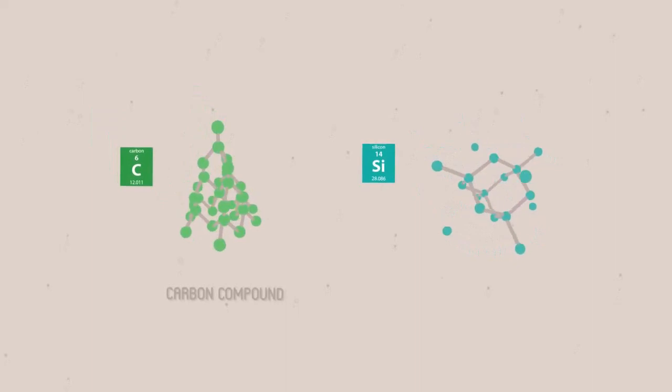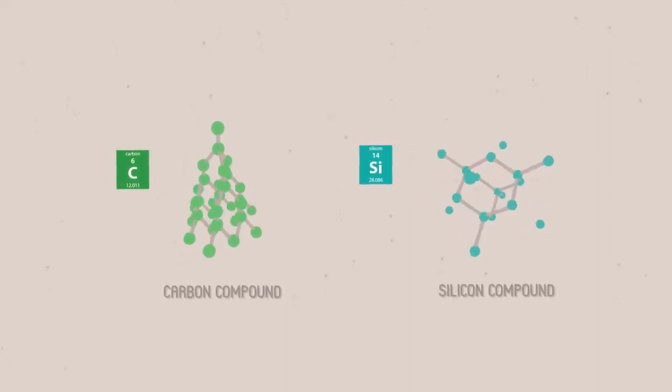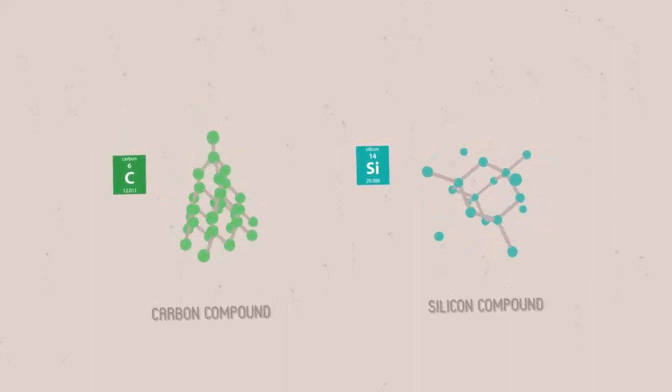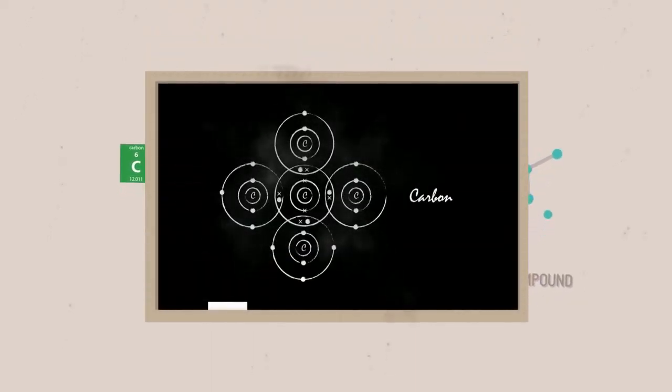Carbon and silicon tend to form giant covalent compounds. These bond in the same way, but instead of forming small molecules with one or two bonds, they form four.